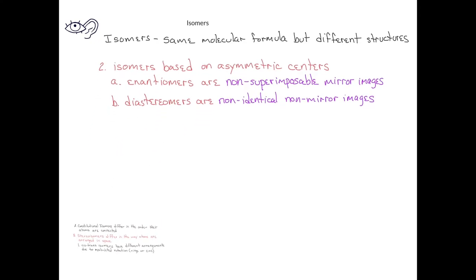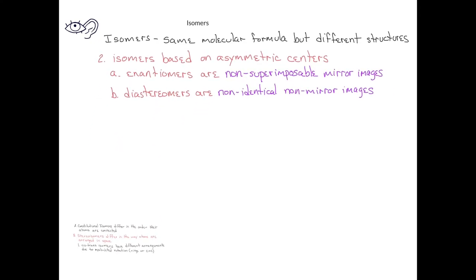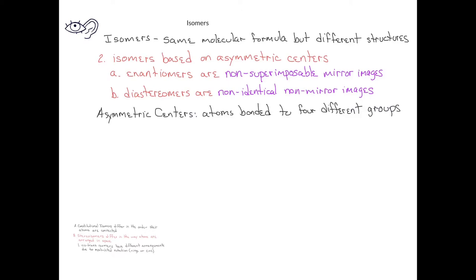Let's look at asymmetric centers in a little more detail. What is an asymmetric center? An asymmetric center consists of an atom which has four different groups attached to it. In the first molecule, the carbon in the middle is bonded to four different groups: a hydrogen, a methyl group, an ethyl group, and a bromine. So we would say that this carbon is an asymmetric center.